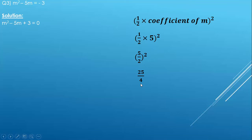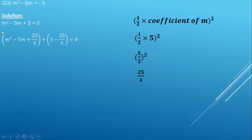This 25 upon 4 will be both added and subtracted in the equation. The positive 25 upon 4 is given to the variable side and the negative to the constant side. So we divide the equation into two parts and get m squared minus 5m plus 25 upon 4, plus 3 minus 25 upon 4, equals 0.